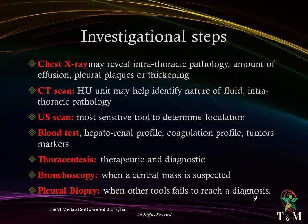Investigations include chest X-ray, which may reveal intrathoracic pathology, amount of effusion, pleural plaques, or thickening. CT scan and Hounsfield Units may help identify the nature of the fluid and intrathoracic pathology. Ultrasonography is the most sensitive tool to determine loculations. Blood tests include hepatic and renal profile, coagulation profile, and tumor markers. Thoracentesis is both therapeutic and diagnostic. Bronchoscopy is used when a central mass is suspected, and pleural biopsy when other tools fail to reach a diagnosis.